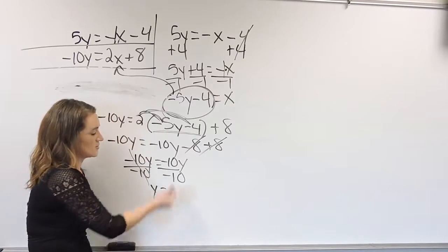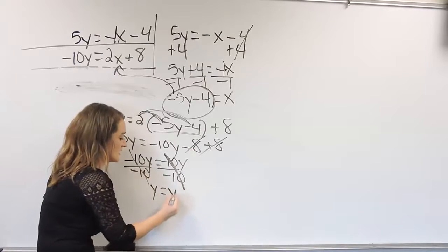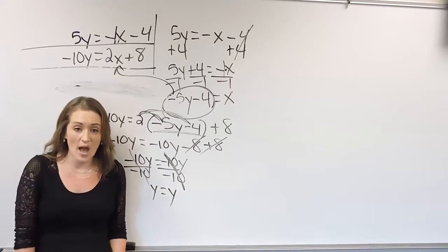well, negative 10 cancels as negative 10, leaving me with y is equal to, well, that also cancels out over there. Negative 10 over negative 10, and I'm left with y is equal to y.